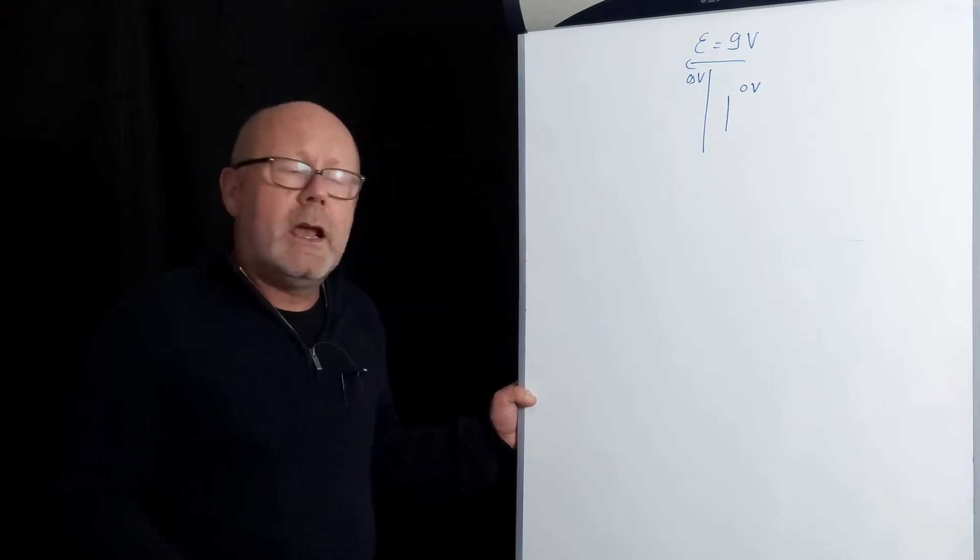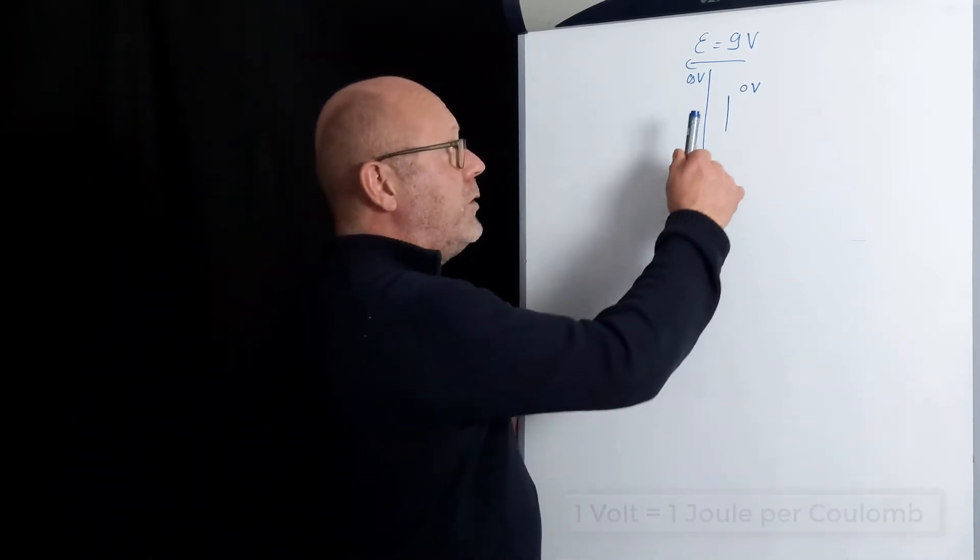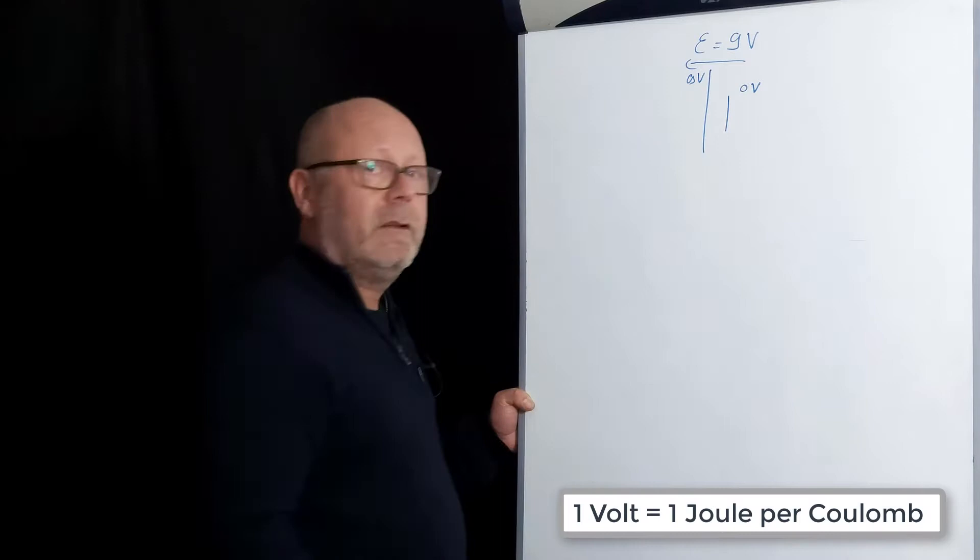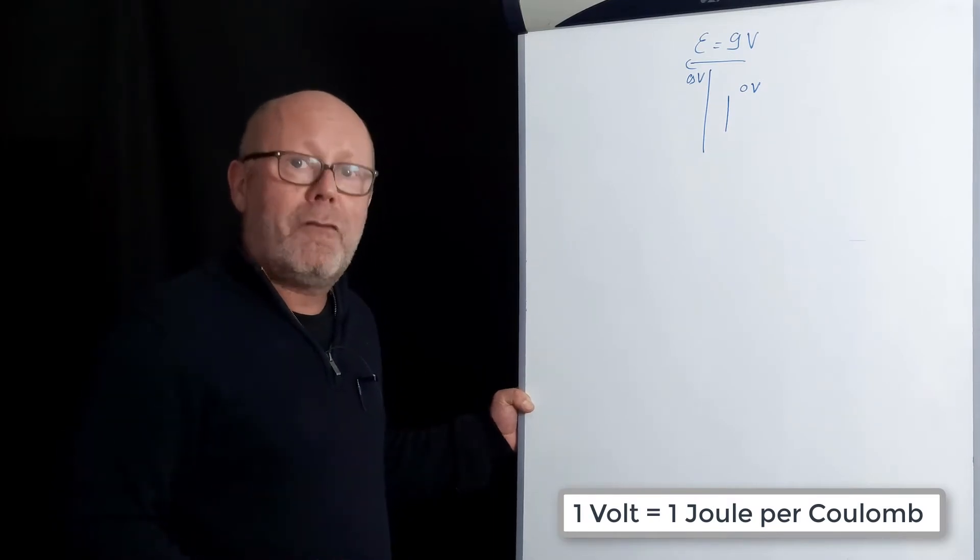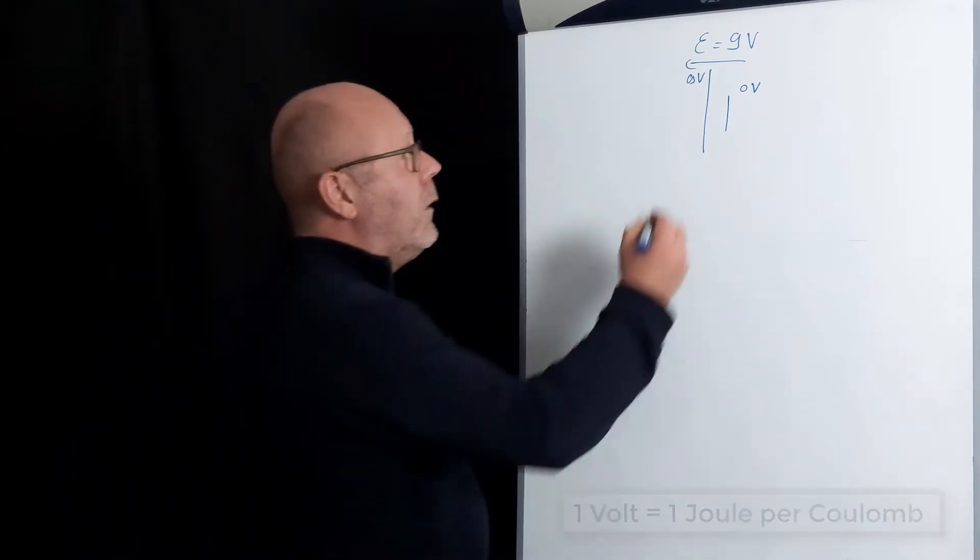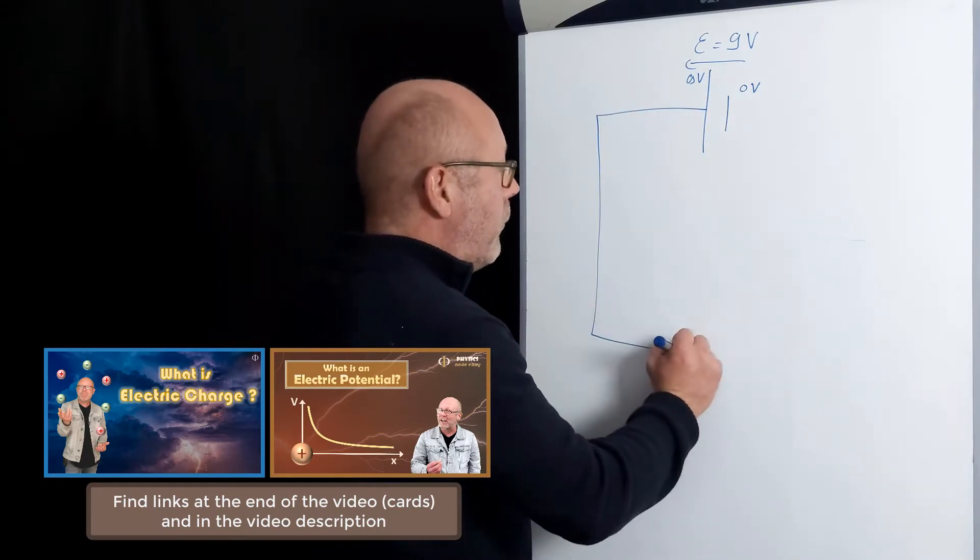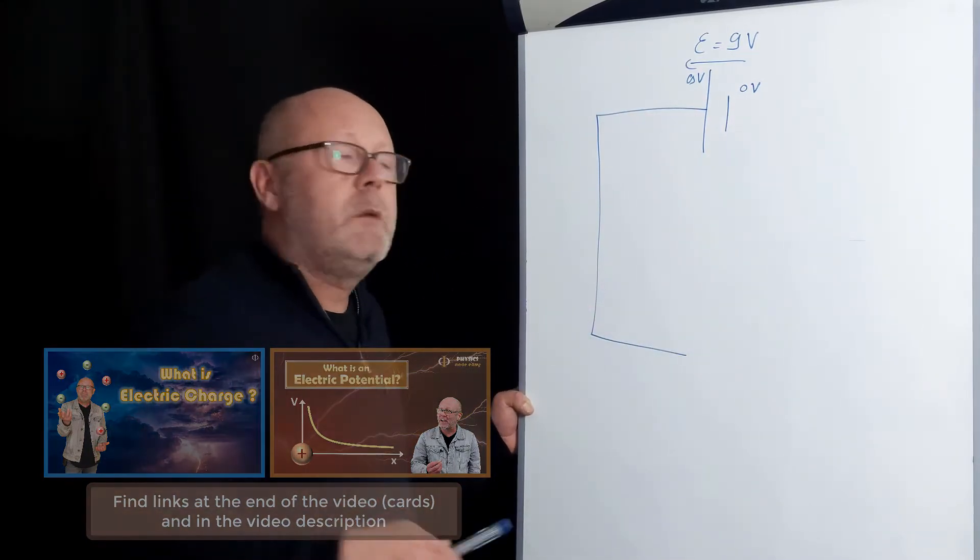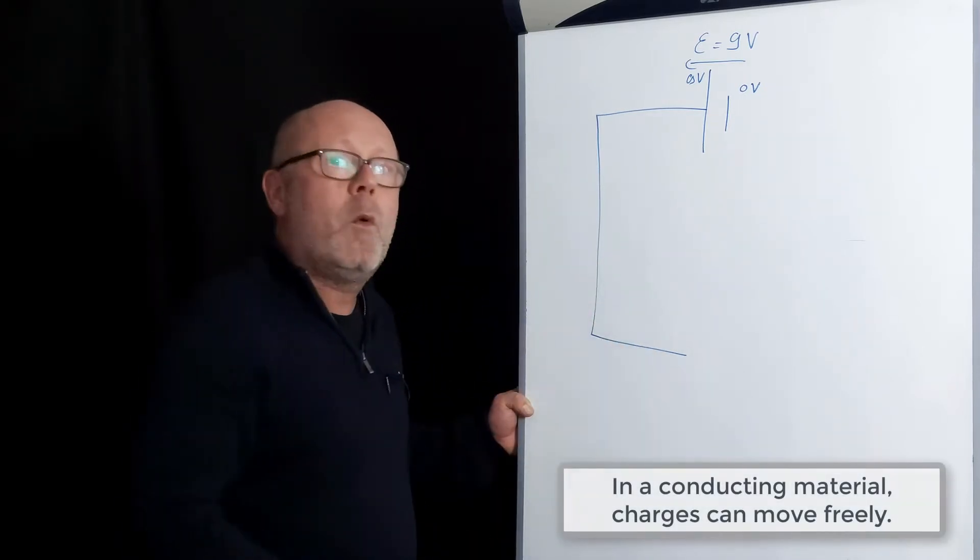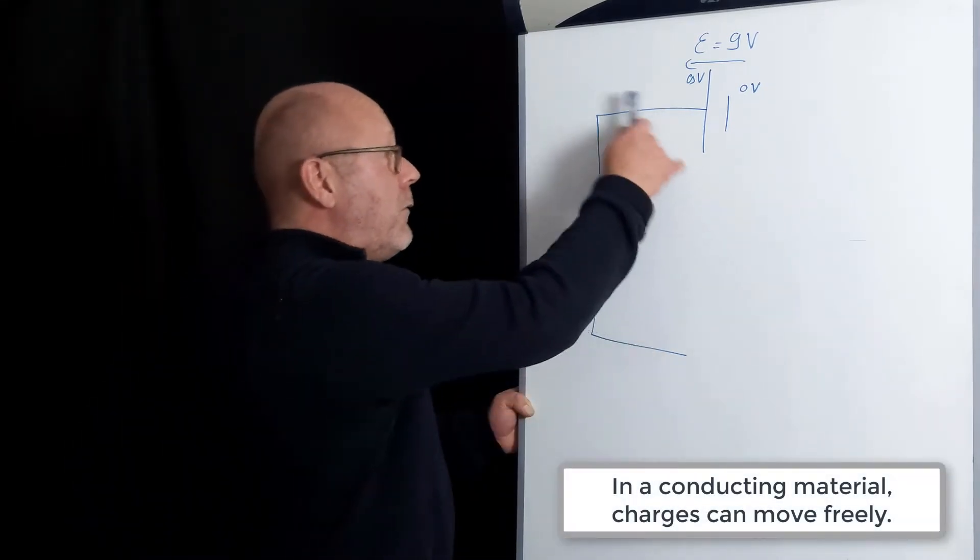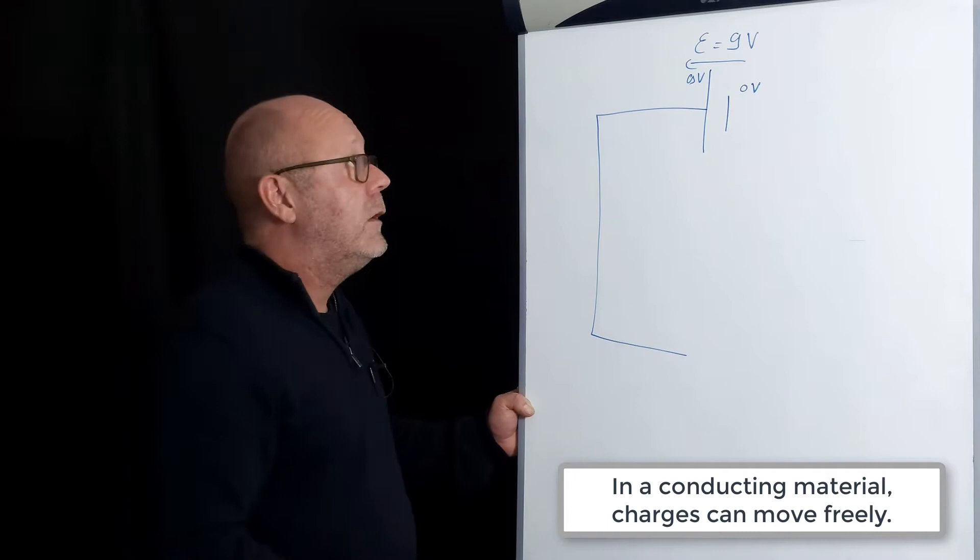9V, what does it mean? It means that one coulomb charge located on this plate will hold 9J of energy. If I connect this plate to a conducting cable, the charges will be able to move freely in the cable without losing energy. Yes, it's made of a conducting material.